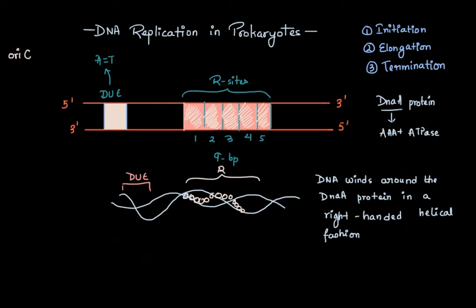As the DNA wraps around the DnaA protein, this creates a positive supercoil towards the DUE region. Due to this positive supercoiling, and because the DUE region is rich in AT sequences, the hydrogen bonds between these AT sequences break apart and the DUE region starts to open up.